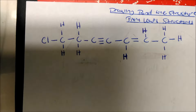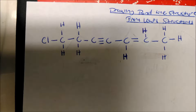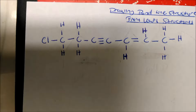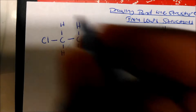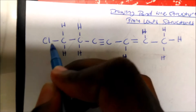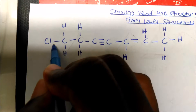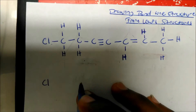Let's talk about drawing bond-line structures from condensed structures. This concept is a little bit tricky, but it's doable — it's just like reading. So how I would start this: I have a chlorine atom here, so I'm going to write my chlorine.